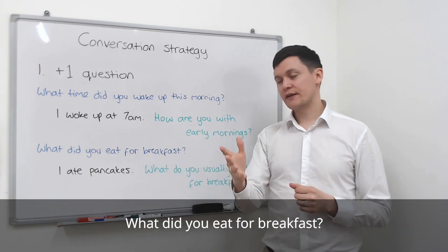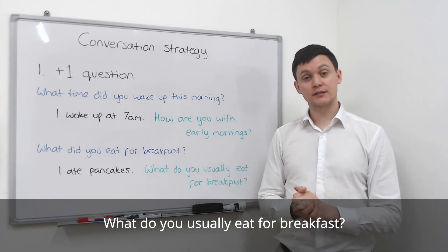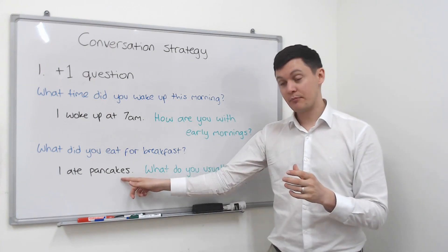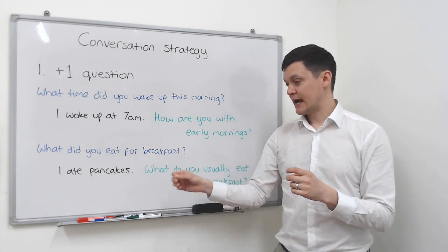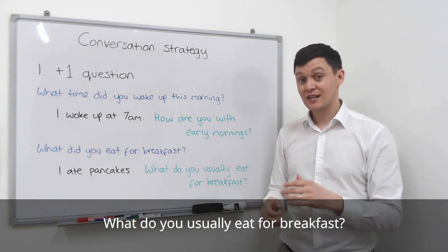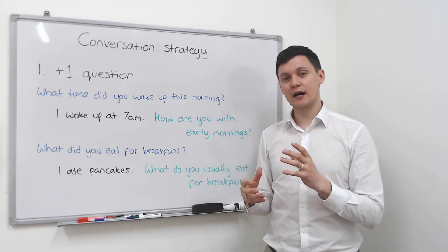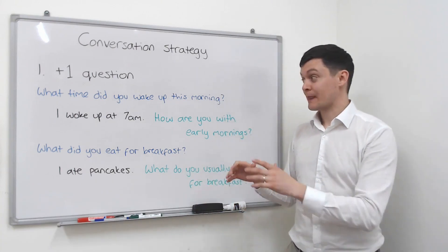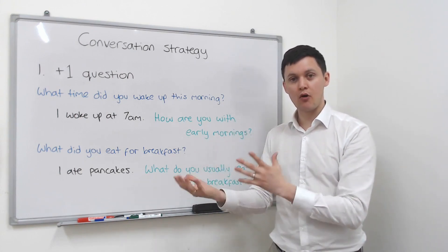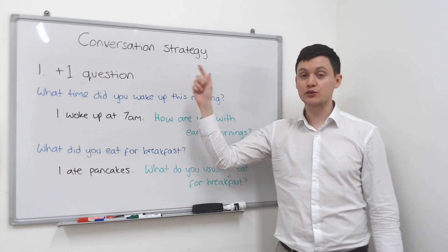Second example: What did you eat for breakfast? — I ate pancakes. What do you usually eat for breakfast? This is again a question connected to your basic answer, and you're flipping it back to your conversation partner. They could answer: I usually eat cereal, or sometimes I have a burger. This is a wonderful strategy to keep the conversation moving, giving more information and more conversation.